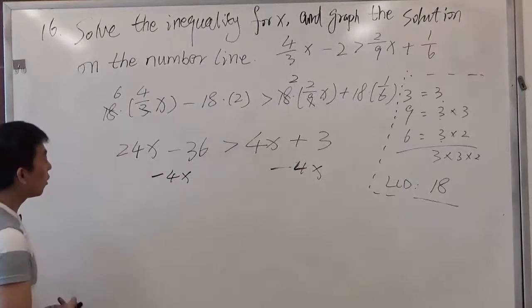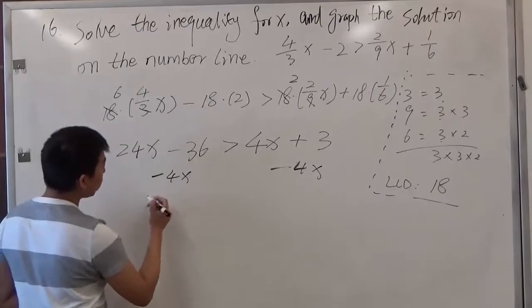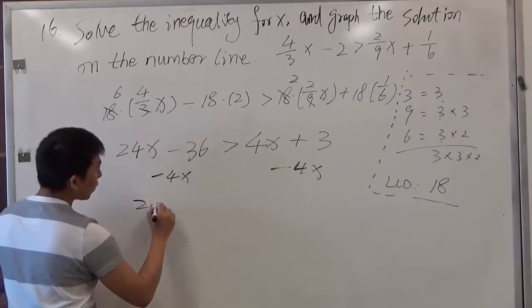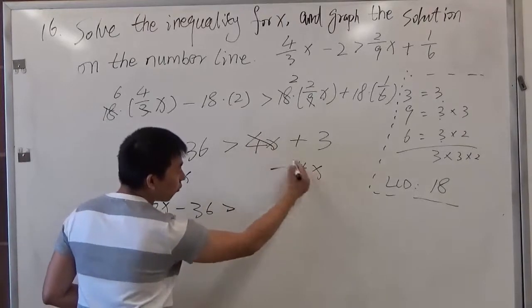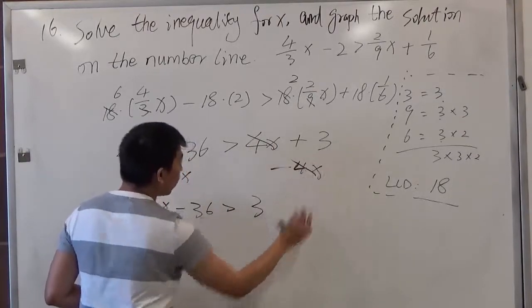After we simplify it, we'll have 24 minus 4x. So it gives us 20x minus 36 is greater than 4x, and 4x cancel out. So we have a 3 here.